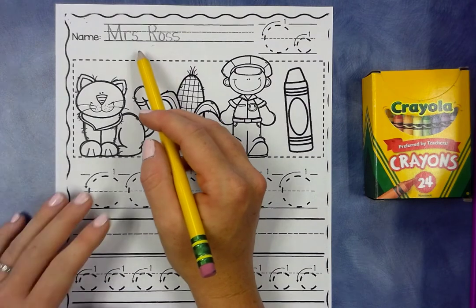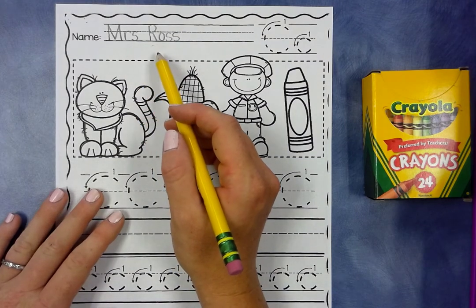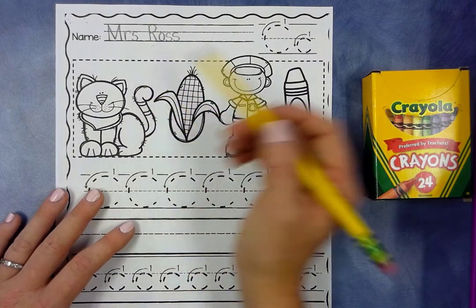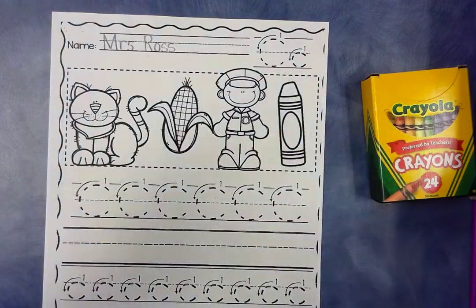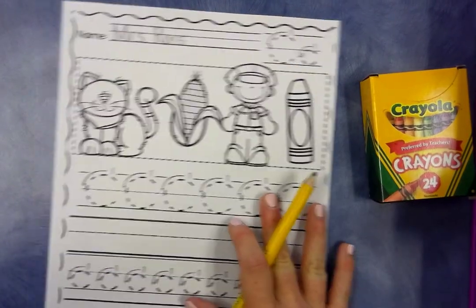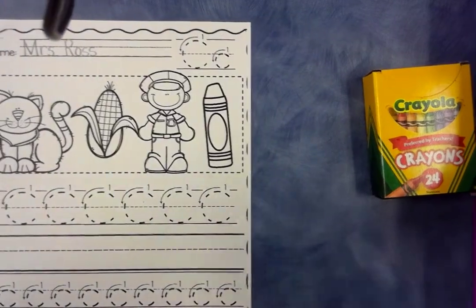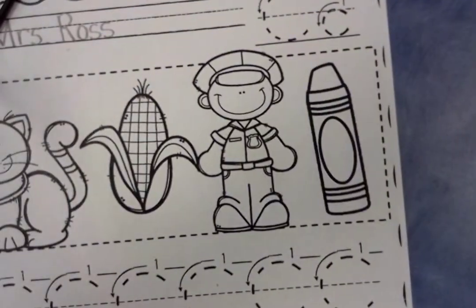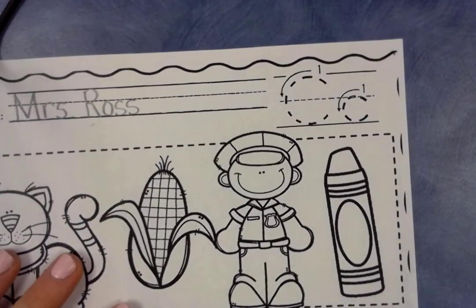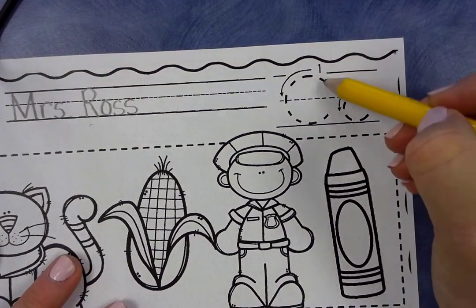Now, you can write your first and last name if you'd like, or you could just write your first name. It's up to you. Now, we are going to go over to the side, and I'm going to move my paper over just a little bit, and I'm going to zoom so that I can get to my corner.